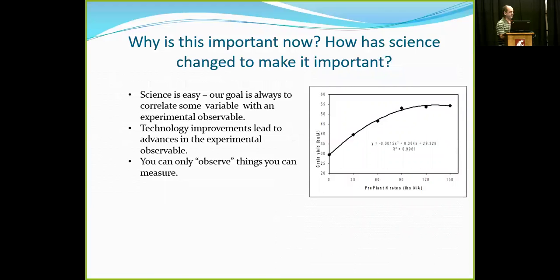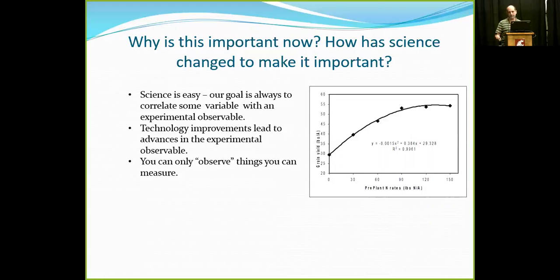Why is this important now, and how has science changed? As a scientist, I always say science is very easy — all science is correlating some experimental variable with some experimental observable. Your variable might be nitrogen and your observable yield, or your variable is plant cultivar and your observable is disease resistance. Usually when technology changes, it changes that experimental observable part. We get new tools, new machines that can measure smaller amounts — new things that give us a way to see things we haven't seen before.